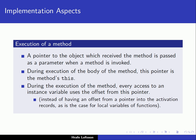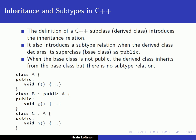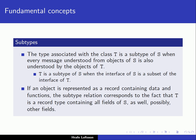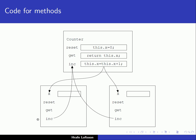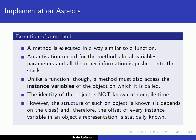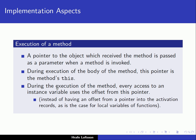When we call a method that belongs to some object, a pointer to the object which received the method is passed as a parameter. When we execute the body of the method, this pointer is the method's `this` — a reference to the current object, as we discussed earlier with the increment function. During the execution of the method, every access to an instance variable uses the offset from this pointer.